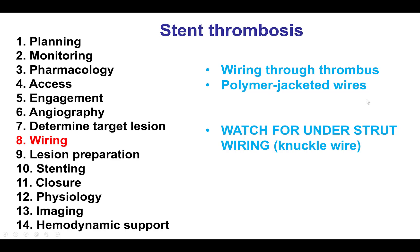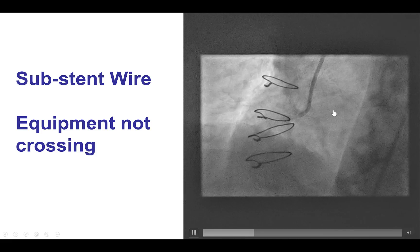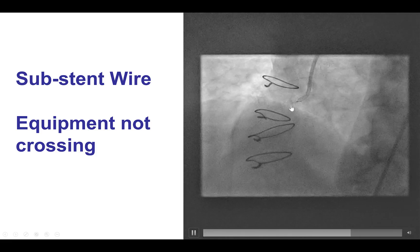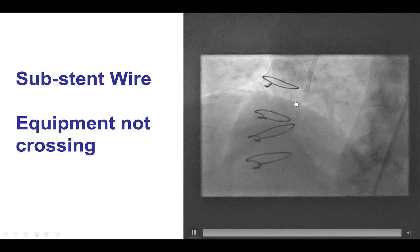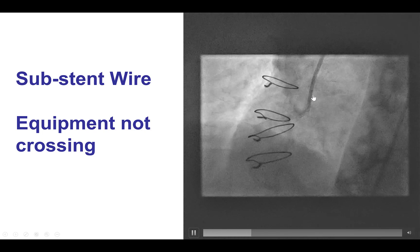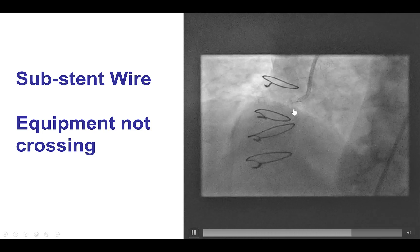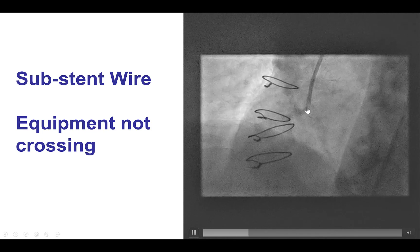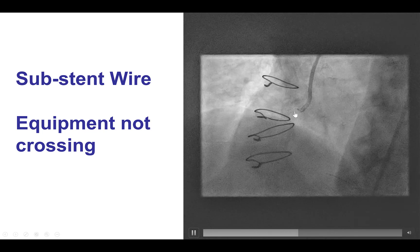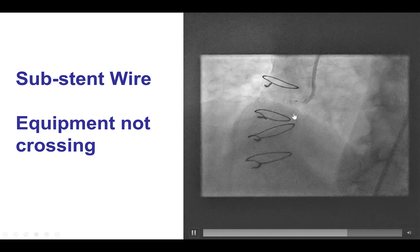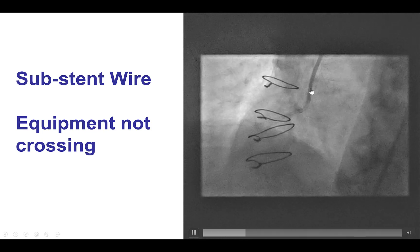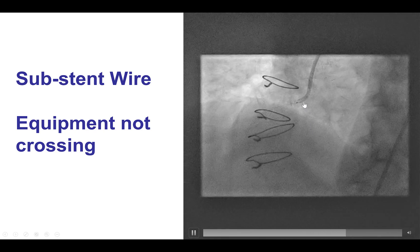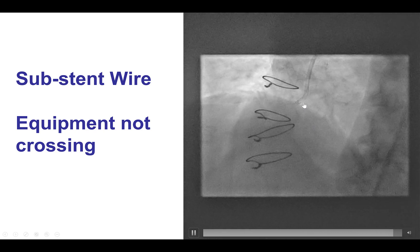Polymer-jacketed wires can also help. This is an example of a patient with right coronary artery stents that have been wired, but the equipment cannot cross, likely because the wire has entered behind the stent struts. In this case, the treatment is to rewire using a looped guidewire.